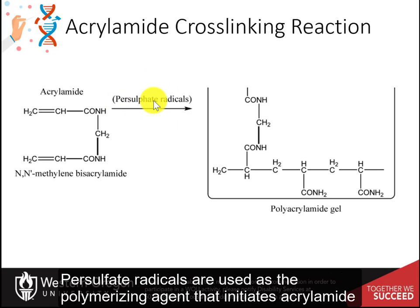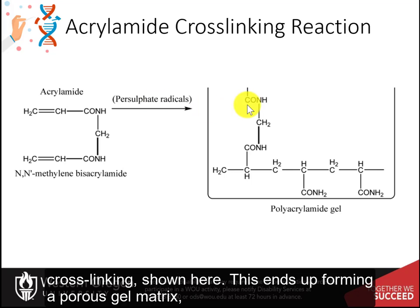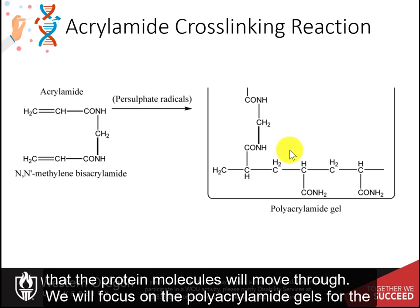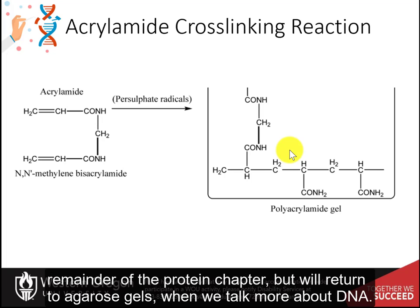Persulfate radicals are used as the polymerizing agent that initiates acrylamide cross-linking, shown here. This ends up forming a porous gel matrix that the protein molecules will move through. We will focus on polyacrylamide gels for the remainder of the protein chapter, but we'll return to agarose gels when we talk more about DNA.